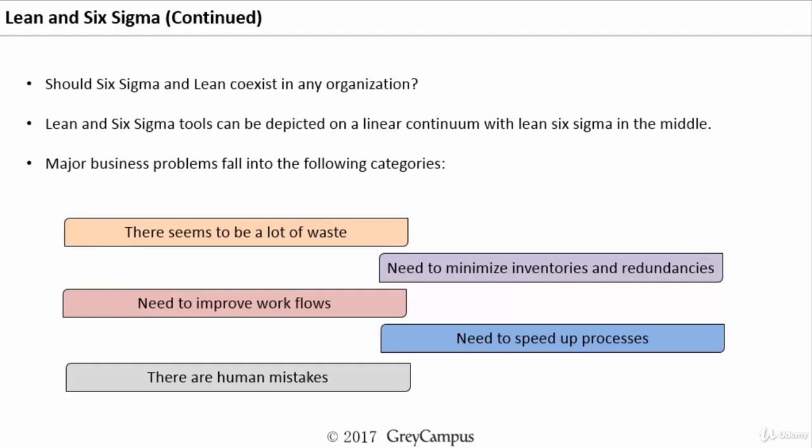Whenever we start an improvement project, we begin with Lean methodology. Once the process becomes stable and is running only under the influence of common cause variation, we then apply Six Sigma to identify the root causes for those common cause variations and take effective solutions. During the improvement phase, some improvements can also take place using lean tools like Poka-yoke, Kanban, and 5S.